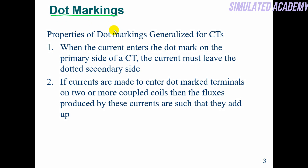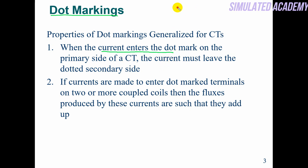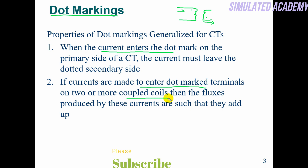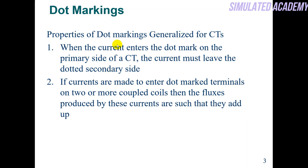Dot marking properties: the first property is that current enters the primary dot terminal. For example, there is a primary terminal, secondary side, dot A on primary and dot A on secondary. The second property is that if dot-marked terminals are coupled, and current enters two or more dot terminals, their fluxes add up. These two dot marking properties we will use ahead.